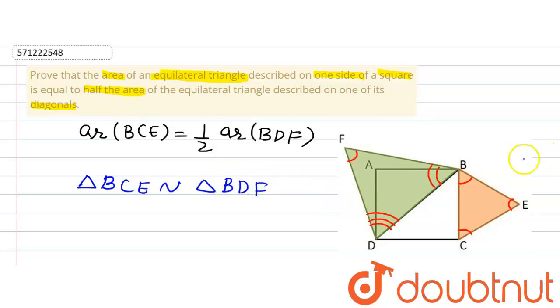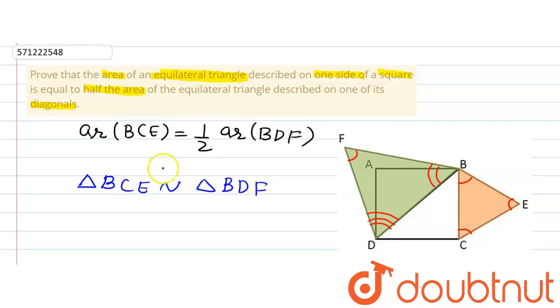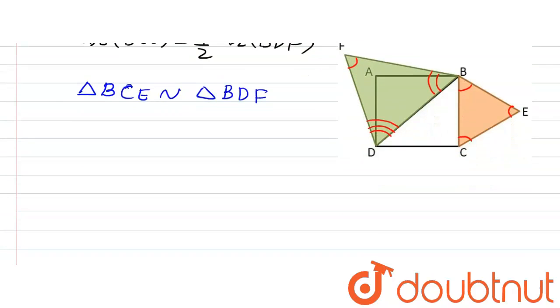Now as both the triangles are similar, we can write that the ratio of areas BCE and area BDF will be equal to the ratio of the sides, that is BC divided by BD whole square.